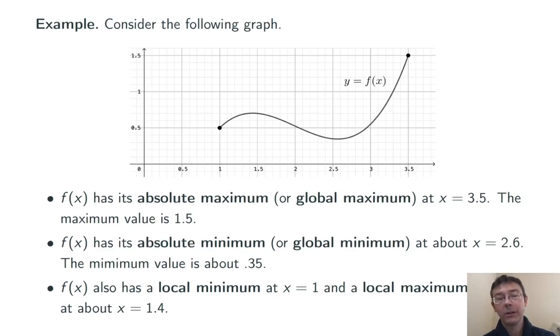The graph is as small as it gets nearby x equals 1 at x equals 1. And similarly, at around x equals 1.4, the graph has a local maximum. The function doesn't get any bigger in any vicinity of that point.